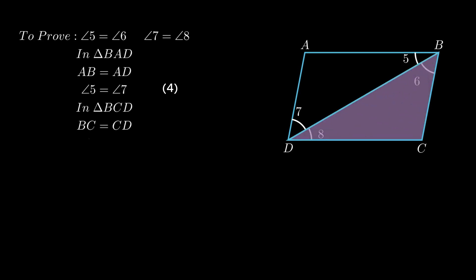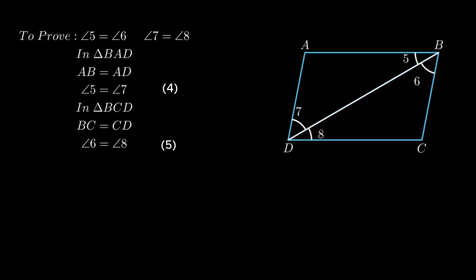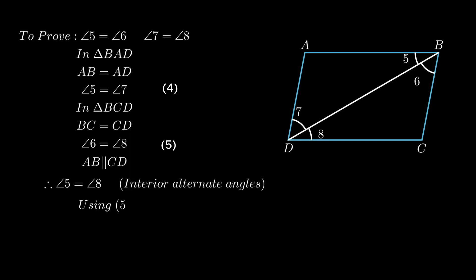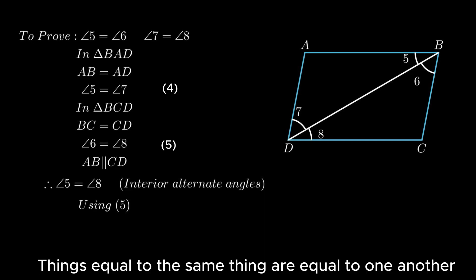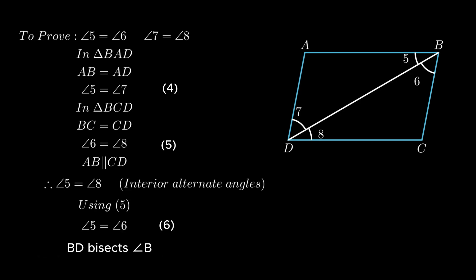Similarly, in triangle BCD, side BC equals side CD, therefore angle 6 equals angle 8, as angles opposite to equal sides are equal. Since side AB is parallel to side CD, as opposite sides of a rhombus are parallel, angle 5 equals angle 8 as interior alternate angles are equal. Using equation 5, angle 6 equals angle 8, therefore by the axiom that things equal to the same thing are equal to one another, we conclude angle 5 equals angle 6, hence diagonal BD bisects angle B. Similarly, using equations 4 and 6, angle 7 equals angle 8, hence diagonal BD bisects angle D.